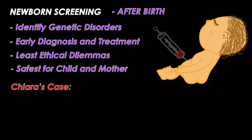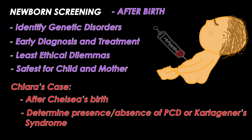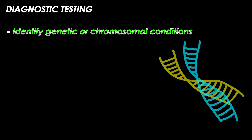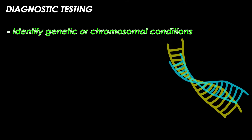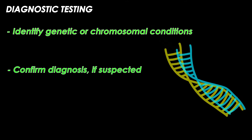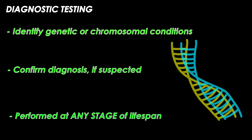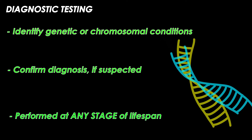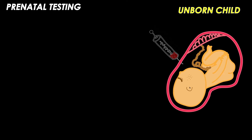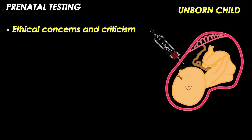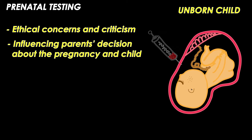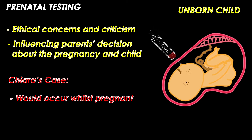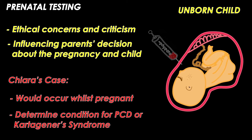In our case, newborn screening would happen after Chelsea's birth to determine if she has Kartagener syndrome or PCD. Diagnostic testing is a test to identify a genetic or chromosomal condition to confirm a diagnosis when a particular condition is suspected, and can be performed at any stage during a person's life. When performed on an unborn child it is called a prenatal test, and this may have several ethical gray areas as it may influence the parent's decision about the pregnancy. This test would have been performed while Chelsea's mother was pregnant.